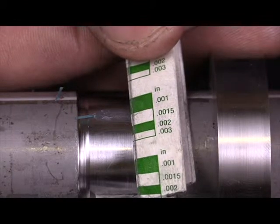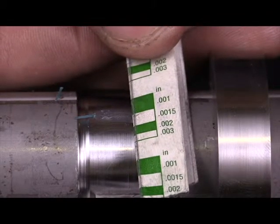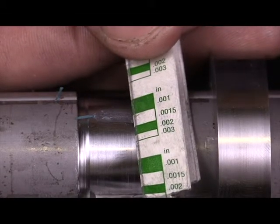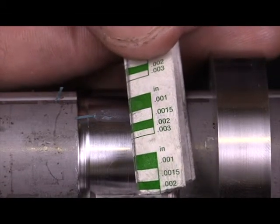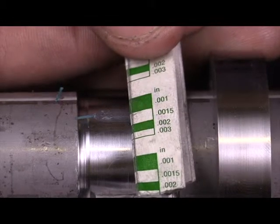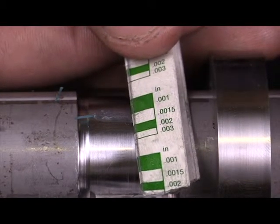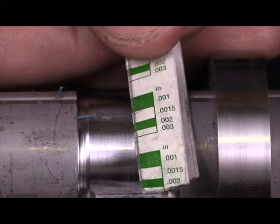Now you want to make sure to keep this in mind. The wider that this is, it actually indicates the less oil clearance that I have. If you think about it, the main bearing cap on this camshaft is closer, which would widen out the plastic gauge. So keep that in mind when you're making these measurements.